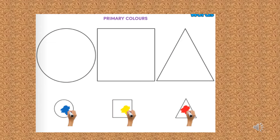Hi! What do you see? I see the shapes. What shapes do you see? Circle, square, and triangle.